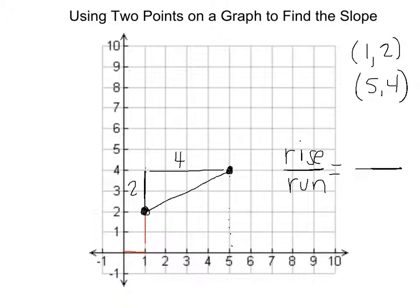So we'll put our 2 in the numerator, our 4 goes in the denominator. Again, because the 2 represents the rise, the 4 represents the run.